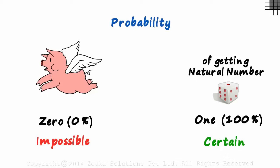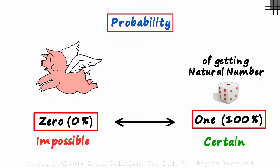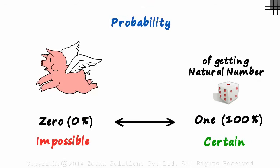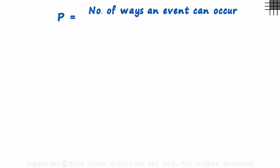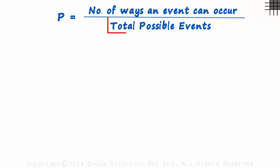That brings us to an important point: the probability of every event will lie between zero and one inclusive. But how is it actually defined? What is probability? Let's call it P. The probability of an event occurring is the number of ways in which an event can occur, over the total number of possible events. To understand this well, we look at three examples.